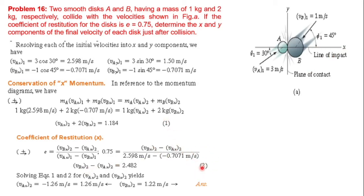From these two equations with two unknowns, we can solve for the final velocity of disk B in the x direction.